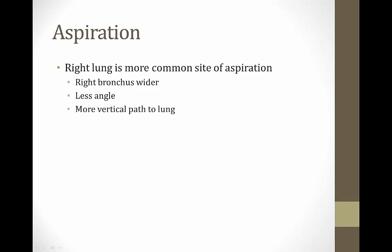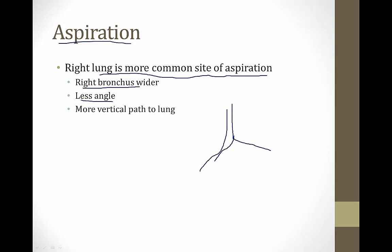The right lung is the more common site of aspiration. When patients vomit and aspirate, or when a child aspirates a peanut, it typically goes to the right because the right bronchus is wider and has less of an angle. Getting into the left lung requires a relatively sharp turn, while the right lung offers a more vertical, gentler path.